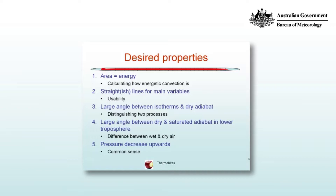It needs to be legible. We want a large angle between the isotherms — that is, the lines of constant temperature — and the dry adiabats, which are the lines that represent the conserved process of parcels of air ascending and descending without exchanging heat with the environment. That large angle means we can distinguish between a process that conserves temperature and a process that conserves heat.